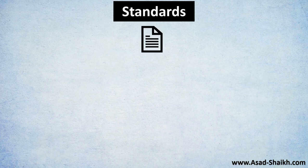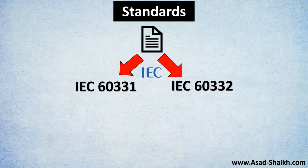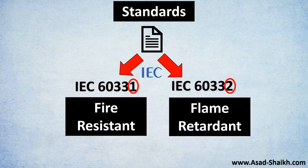In terms of standards, the two most important and widely used in the industry are the IEC standards: IEC 60331 and IEC 60332. The difference between these two lies in the last digit — the 1 stands for fire resistant cable and 2 stands for flame retardant cable. There are also other standards like BS6387, but the IEC standards are the most widely used.